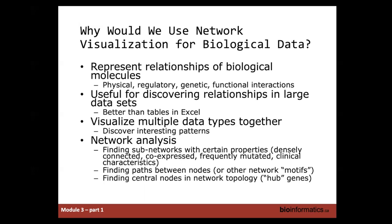Network analysis also allows us to find sub-networks within our network — in the previous picture, you could clearly see groups of genes that all interact together and form a unit. You can also find paths showing the relationship between node A and node B. Another common concept is hub proteins or hub genes — a node in your network that is more important than others because it connects many different things. If you remove that node from the network, certain aspects of the network start to deteriorate. It's called the hub of a network.